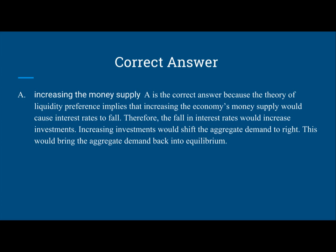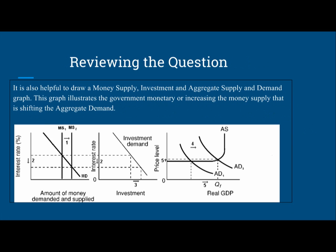A is correct because under the theory of liquidity preference, it implies that increasing the economy's money supply would cause interest rates to fall. A decrease in interest rates would cause an increase in investments. An increase in investments would shift the aggregate demand to the right, and this would bring the aggregate demand back into equilibrium. You can also refer to the graph shown — an increase in money supply increases investment demand, thus increasing aggregate demand.